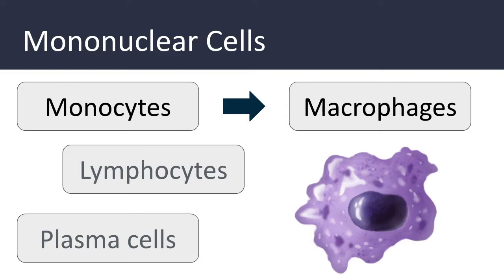In some specific tissues like the liver or the brain, macrophages have special names such as Kupffer cells or microglia. Macrophages begin to move from circulation into tissues after an inflammatory stimulus begins and become the dominant cell type after about 48 hours. In addition to destroying foreign invaders or damaged tissues, these cells also secrete cytokines and growth factors and can activate other cells like T lymphocytes.